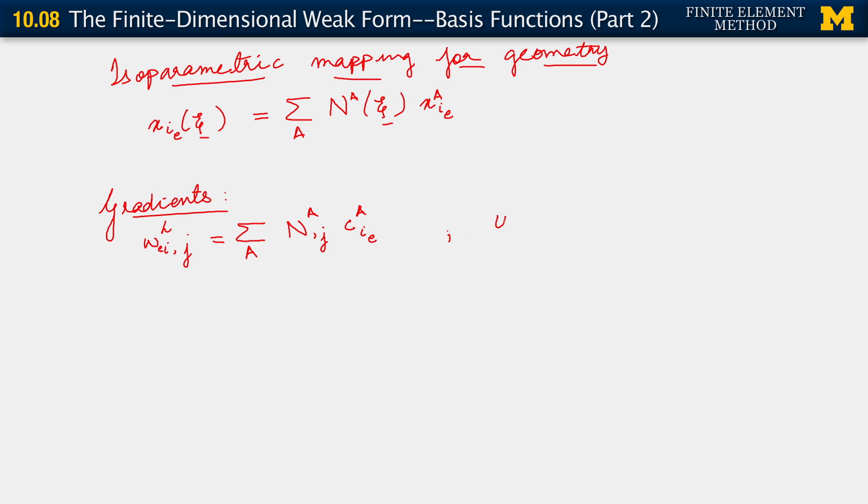And of course the same thing for u^h_{i,j}. u^h_{i,j} over element e is again sum over a, N^a_{,j} d^a_i,e. And we know straight away where we expect to use this. Of course this shows up directly in the weak form when we look at it.